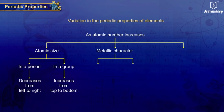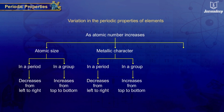The metallic character decreases from left to right in a period and increases from top to bottom in a group.